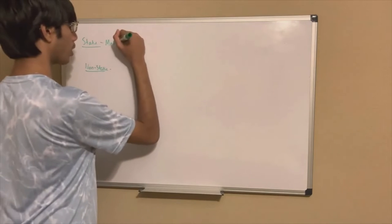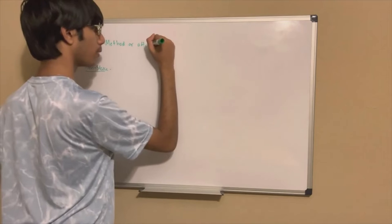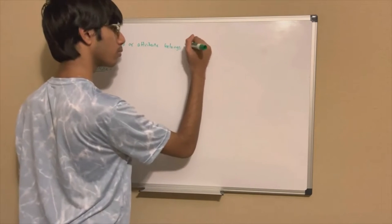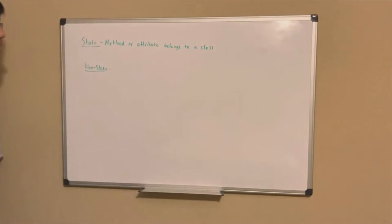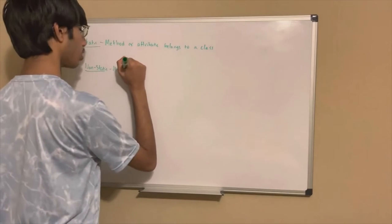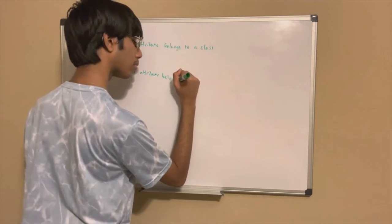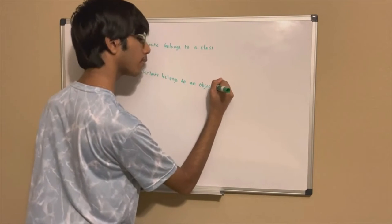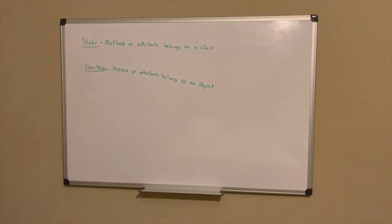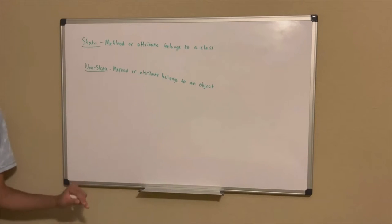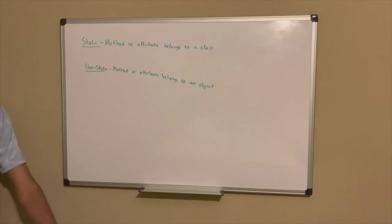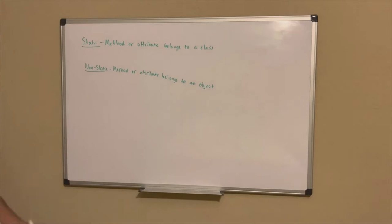Let's define the two. Static: method or attribute belongs to a class. Non-static: method or attribute belongs to an object. I have not covered objects yet, but hopefully this will give an introduction and a pathway for me to fully cover objects in another video. That's why I'm talking about the difference between static and non-static — a lot of people ask why you would make a method static or non-static and what the difference is.